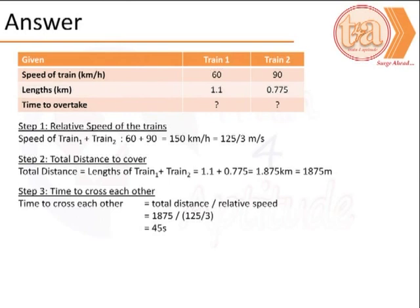The next step is to calculate the total distance covered by the trains which is the lengths of the two trains 1.1 plus 0.775 which is 1875 meters.